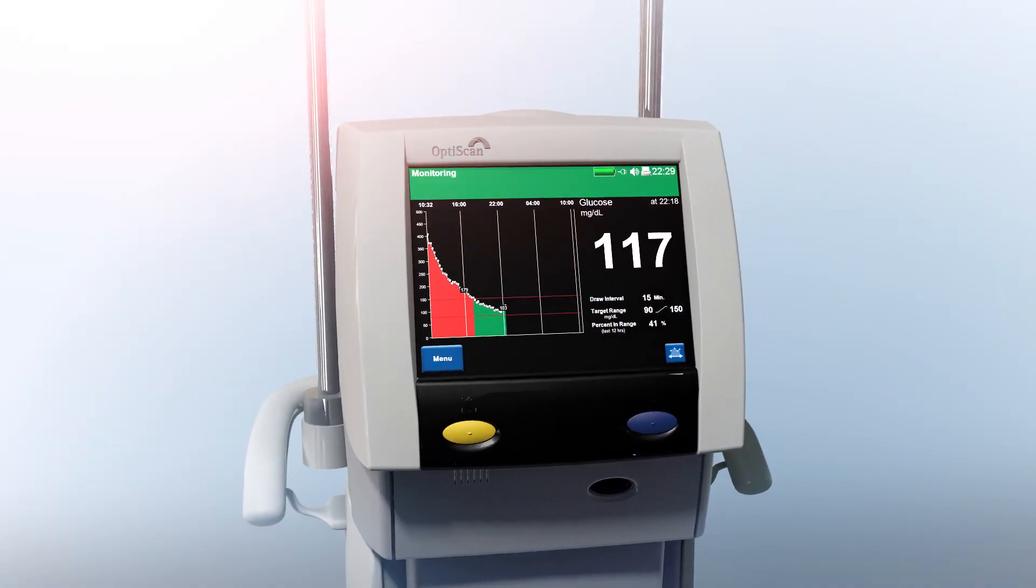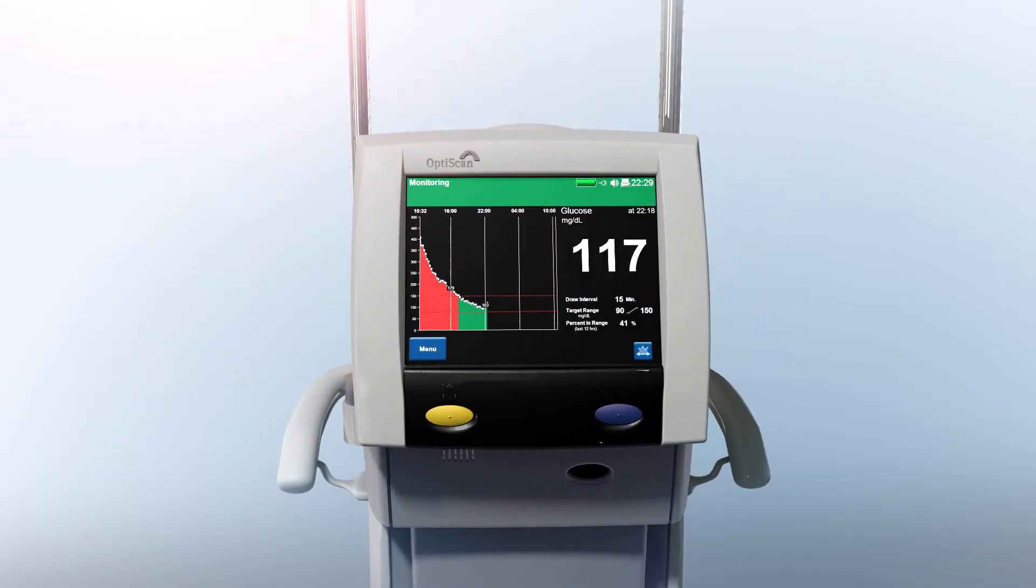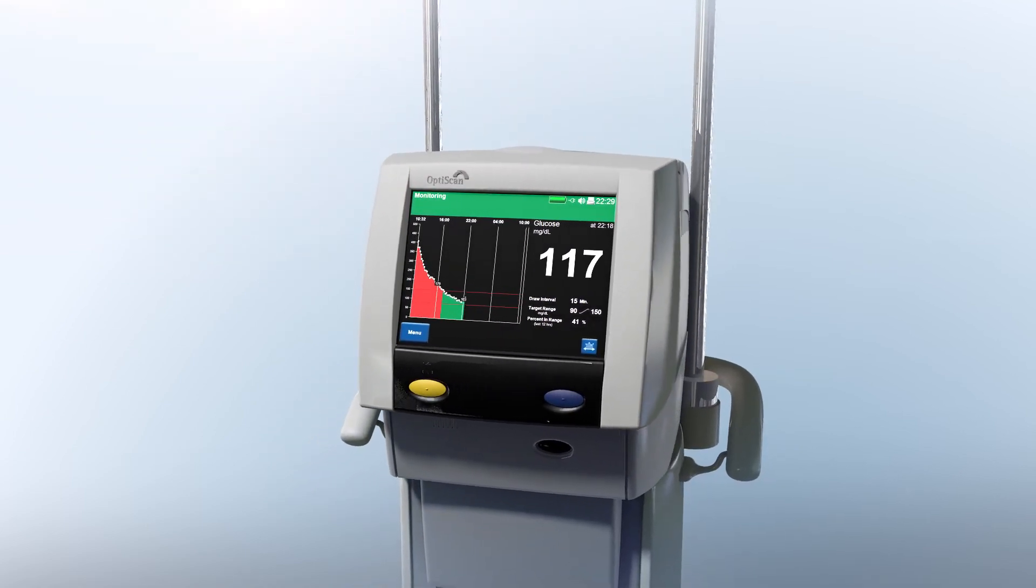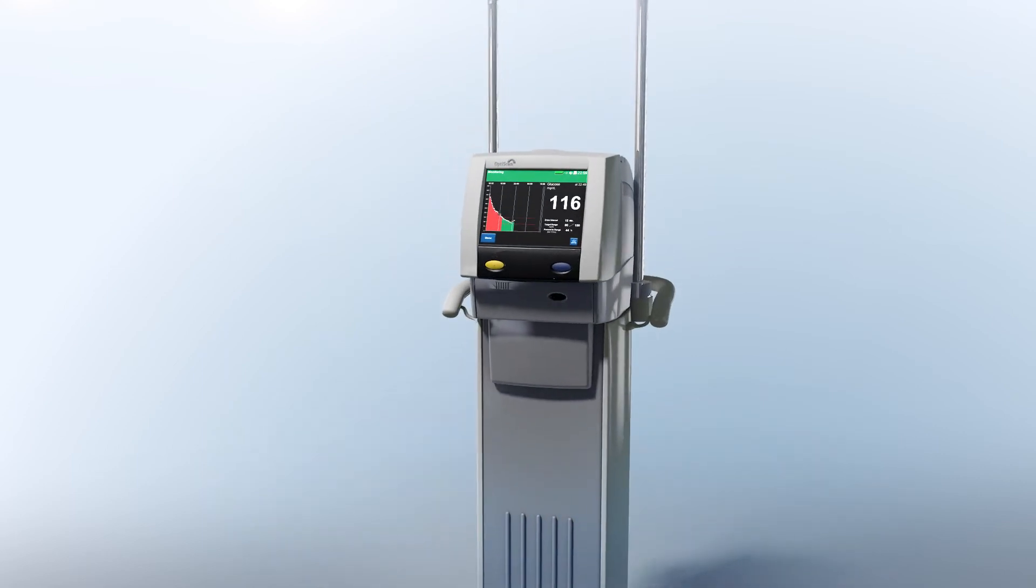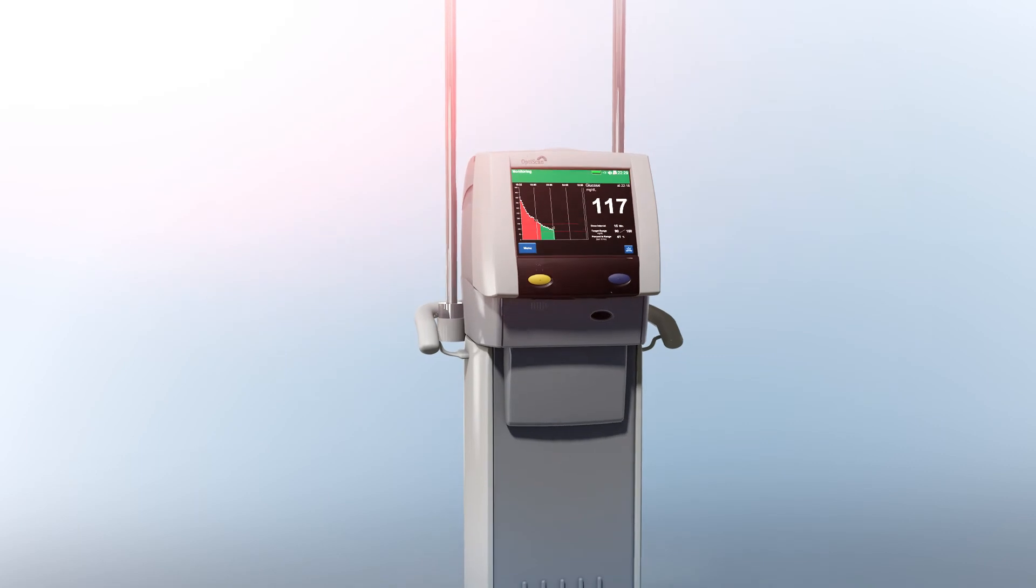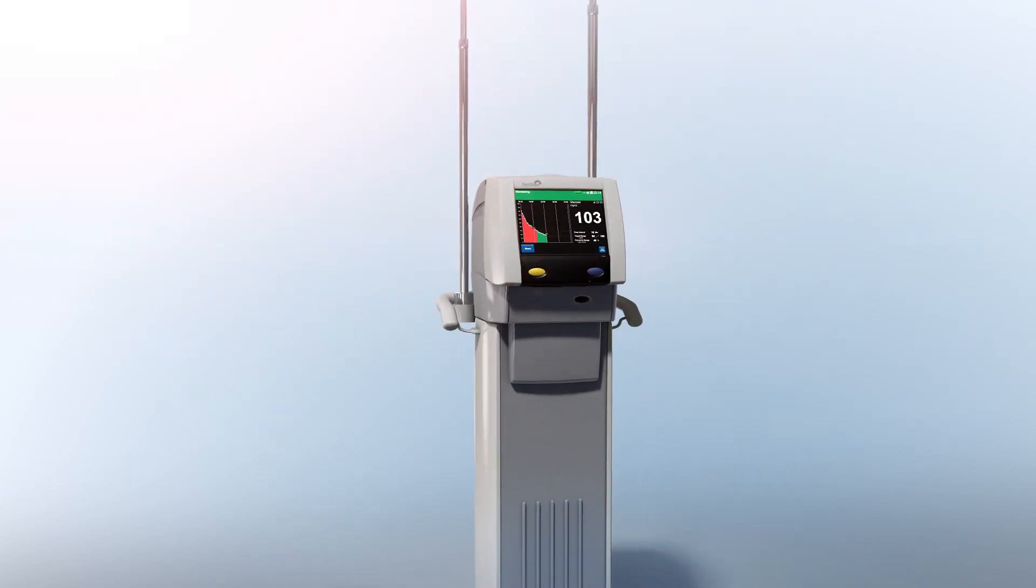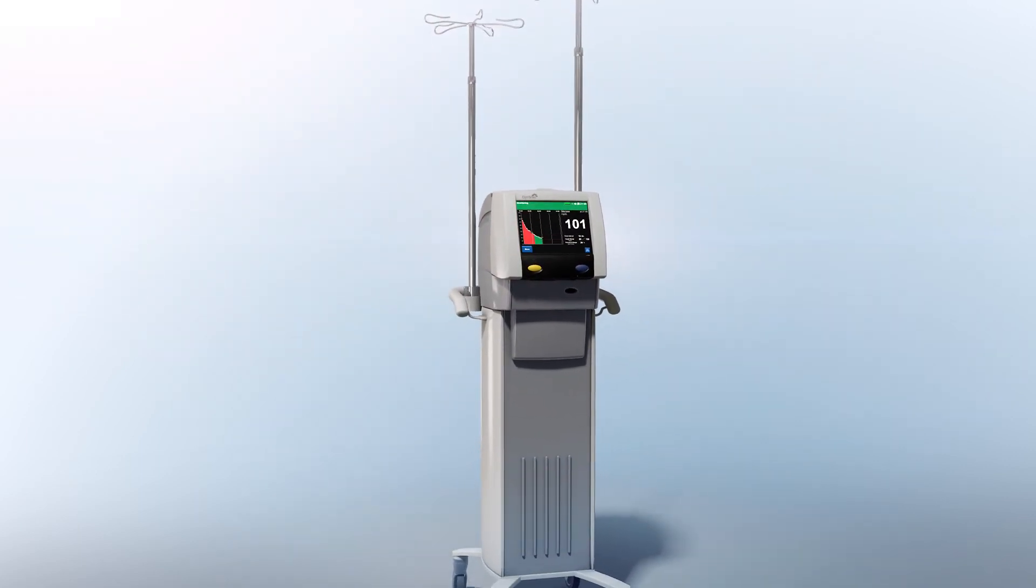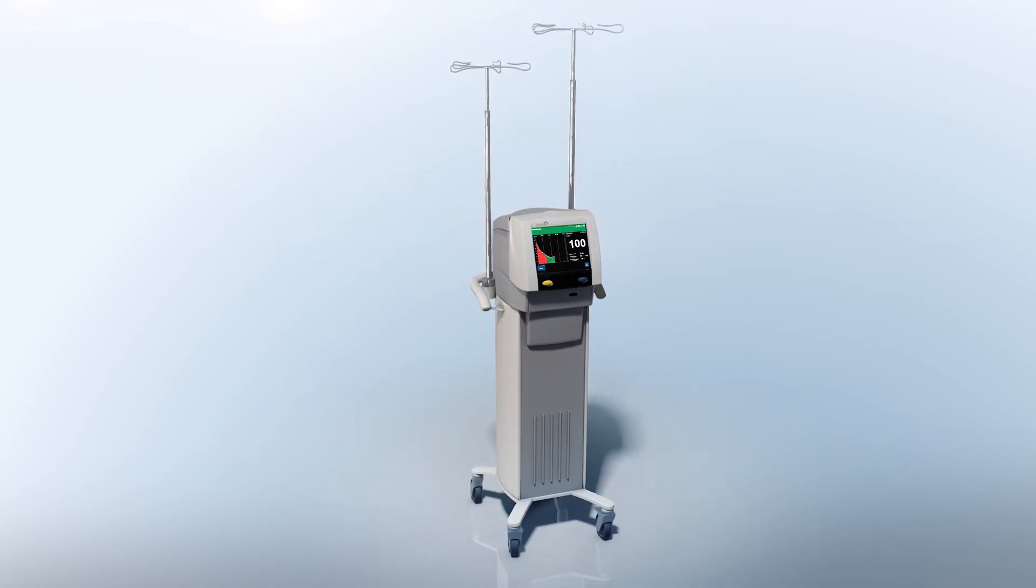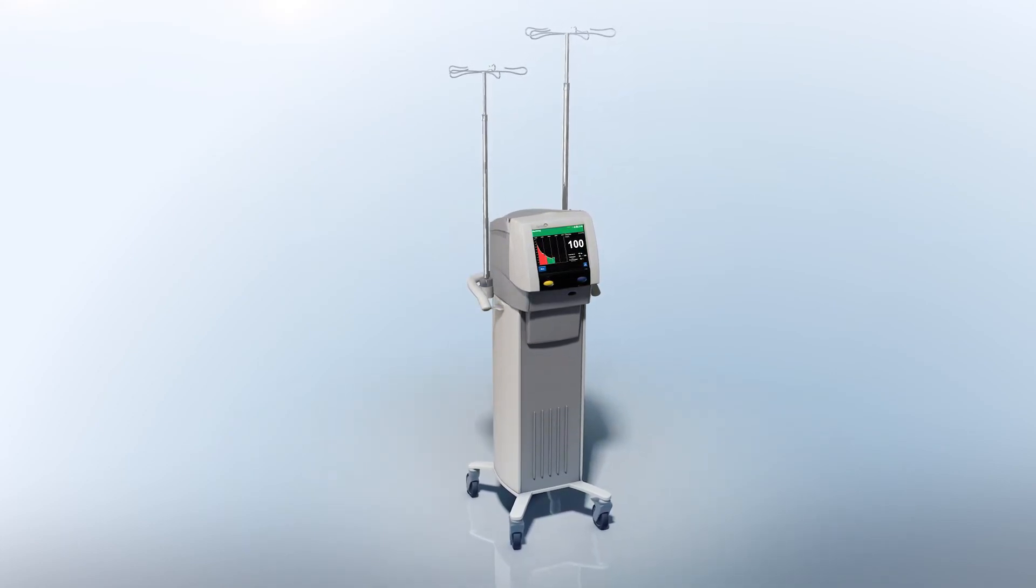The OptiScanner 5000 is a first-of-its-kind bedside blood monitoring system that provides automated monitoring of patients' glucose levels to help clinicians maintain desired levels of glucose control. It represents the first step in the development of an automated bedside blood monitoring platform that will deliver valuable metabolic and hemodynamic trending information for critically ill patients.